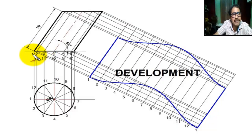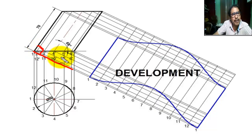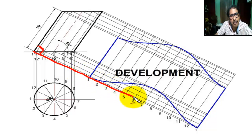Now, from each dash point, we draw a projection line perpendicular to the axis line.